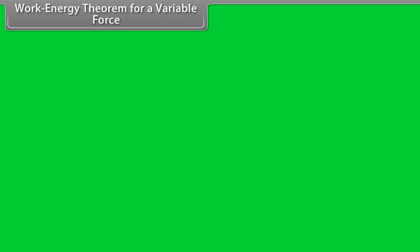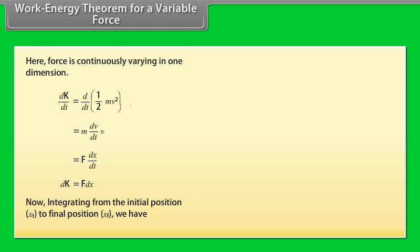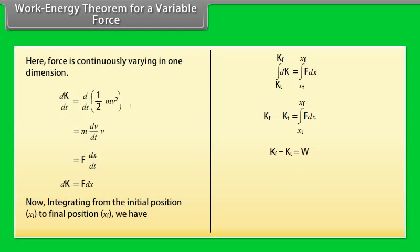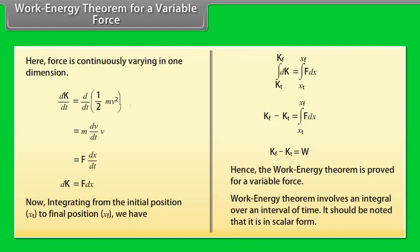Work energy theorem for a variable force. Here force is continuously varying in one dimension. By calculating dk by dt equal to d by dt into half mv square, we get dk upon dt is equal to f into dx by dt, which gives dk is equal to f dx. Now integrating from the initial position xi to final position xf, we have kf minus ki equals to work. Hence, the work energy theorem is proved for a variable force. Work energy theorem involves an integral over an interval of time. It should be noted that it is in scalar form.